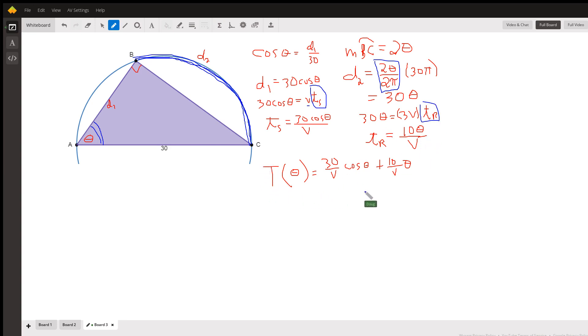So there is a function for the time it takes him to get from A to C, where he swims part way to some point B and then runs the rest of the way. Now to actually find out if there's a point B that minimizes the time, we would find T prime of theta, set it equal to zero to get the critical numbers.